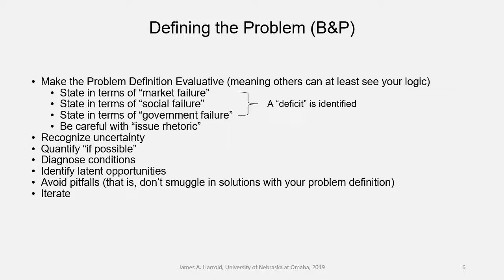Let's talk about defining the problem using the Bardach text. First, they say: make the problem definition evaluative. That means people can at least see your logic — they might not agree with you, but they can see your logic through the evaluative way that you state the problem. What Bardach is talking about here is stating the problem in terms of a deficit. What is missing here? There are about three different kinds of deficits: market failure, social failure, or government failure.